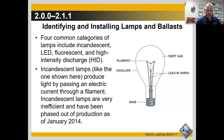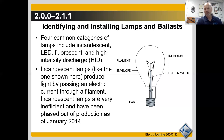The incandescent lamp has an envelope with gas inside, lead wires, and a base. The base is the negative, and one of the leads is the hot. The envelope has no oxygen, so it can't create an arc or fire. Instead, it superheats the tungsten filament until it gets hot enough to produce incandescent light — that's why the bulb glows.